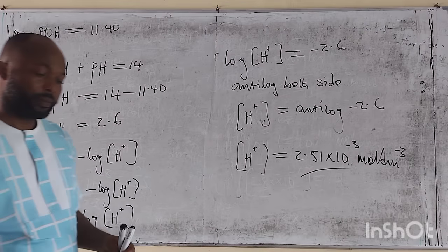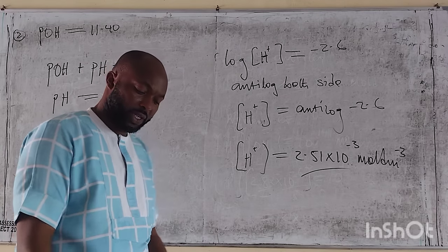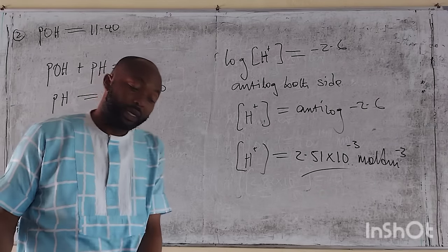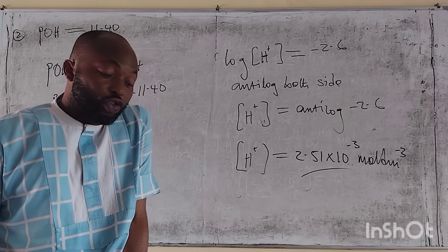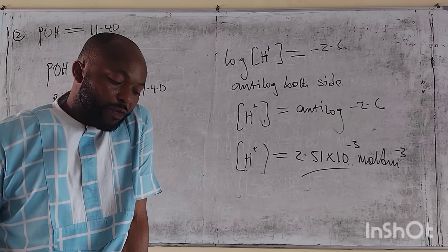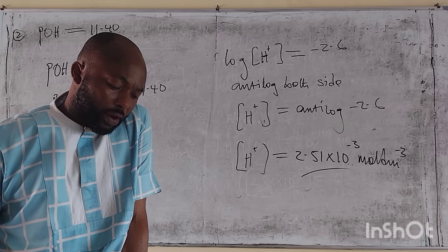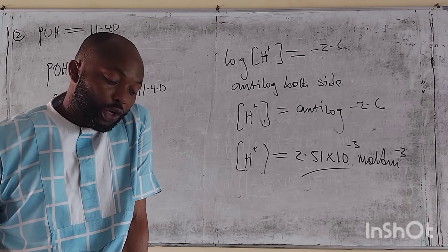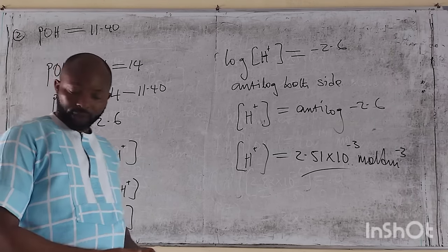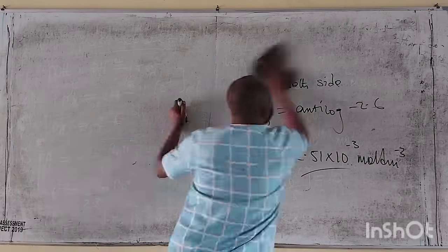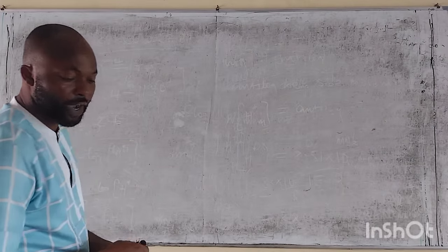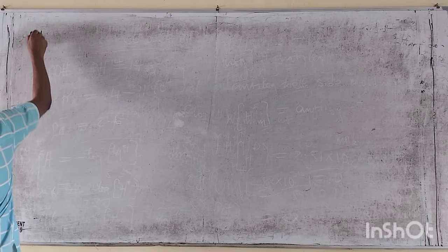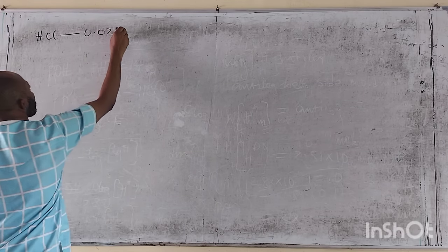Question 3: calculate A — the concentration of hydrogen ion in 0.025 mol/dm³ of HCl solution. HCl ionizes to give H⁺ and Cl⁻. One mole of HCl gives one mole of H⁺, so 0.025 mol of HCl gives a hydrogen ion concentration of 0.025 mol per dm³.